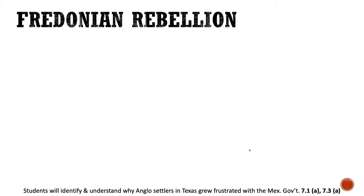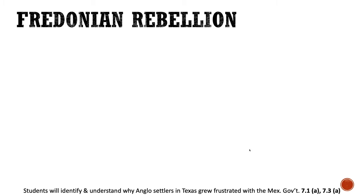We start by talking about the Fredonian Rebellion. Hayden Edwards, an American impresario, declared independence from Mexico because of run-ins with the Mexican government. When he got his land grant, he was told by the Mexican government that there were already Mexican settlers on the land he'd been given and that he was to allow them to stay. But when he went to his colony and started bringing in settlers, he started trying to run the Mexican settlers off, even though their families had owned that land for maybe a hundred years.